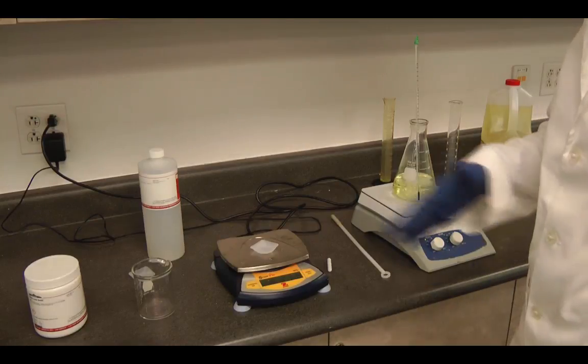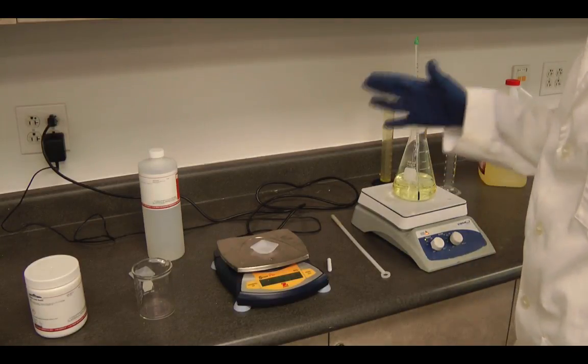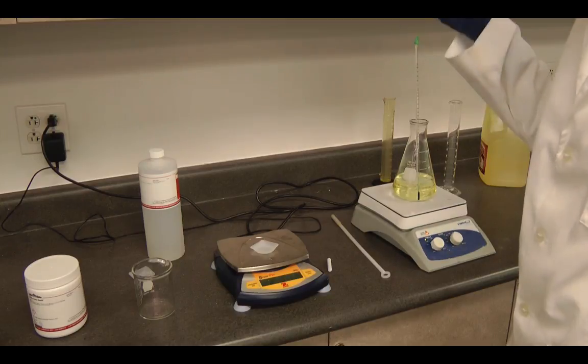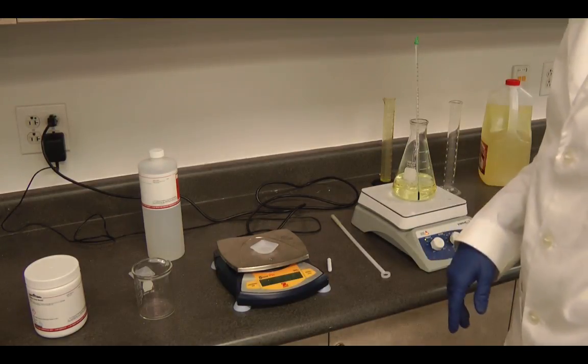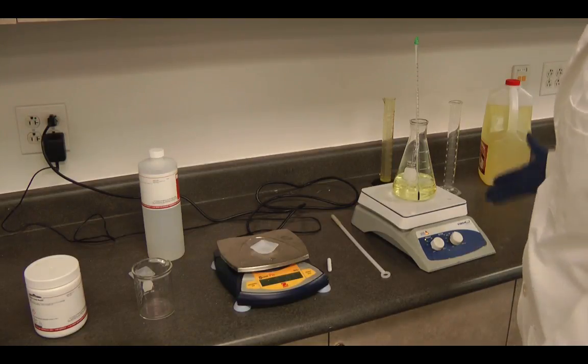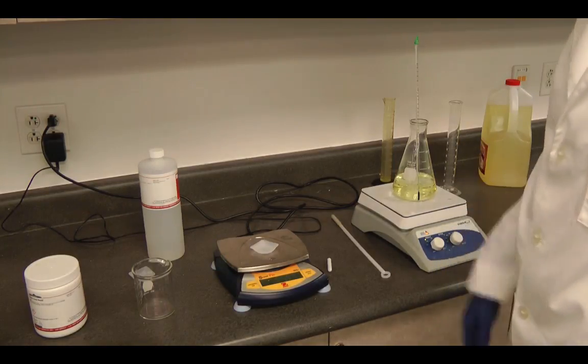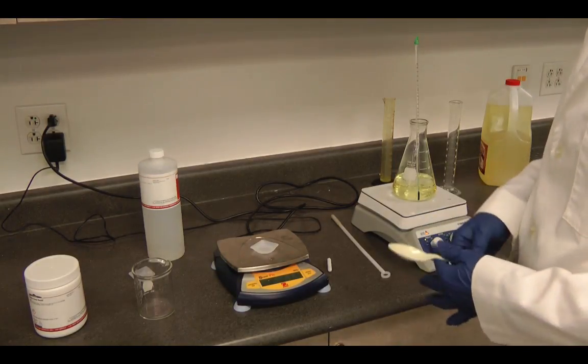If we let it go lower than that, then the reaction slows down. If we let it get above 70 degrees C, then we have polymerization and we don't have the triglycerides for our transesterification to work.